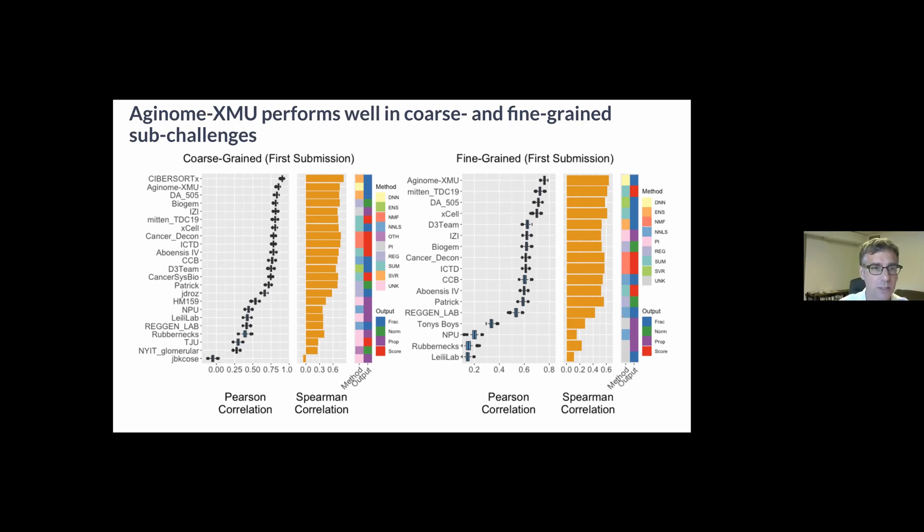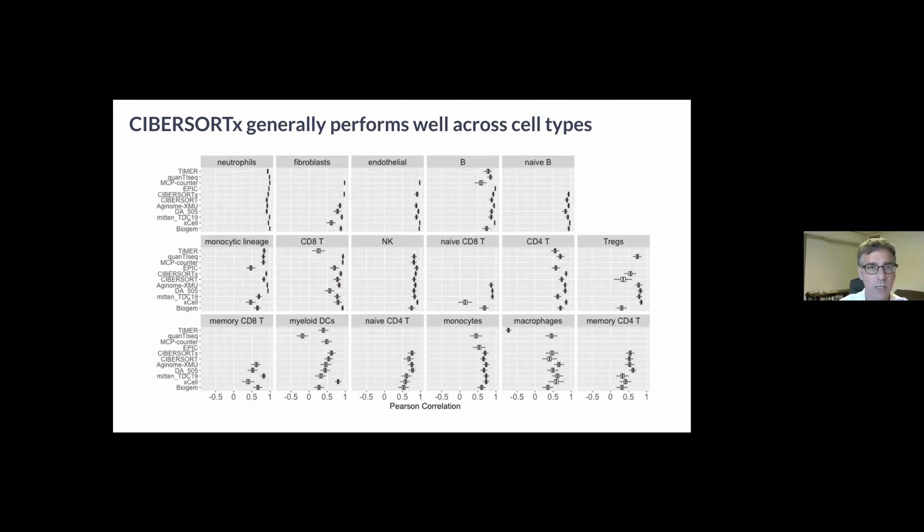In the fine-grain challenge, Axonome XMU was the clear winner and CIBERSORTx was not even evaluated because it didn't provide predictions for all cell types in the fine-grain sub-challenge.